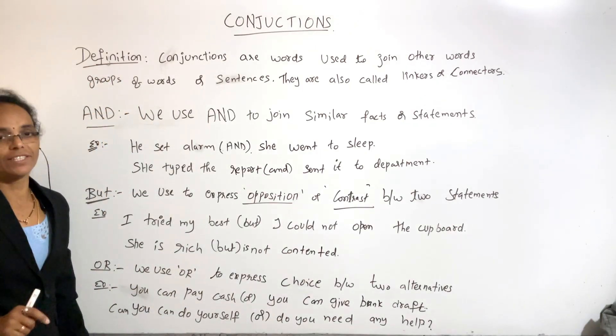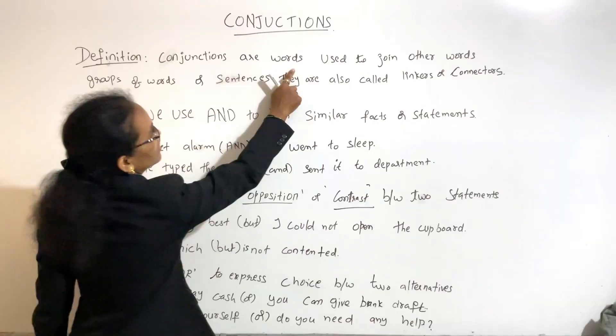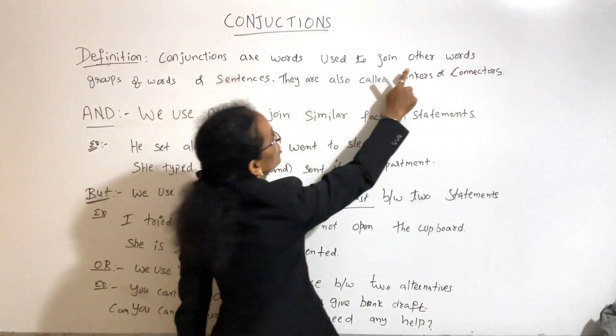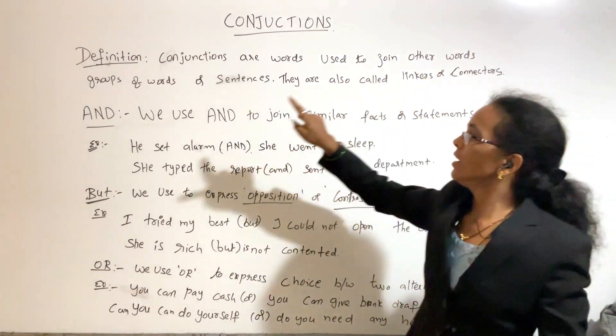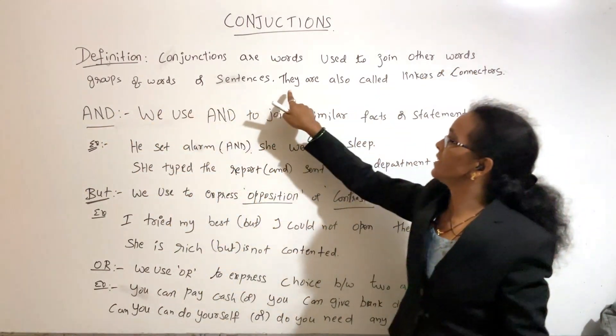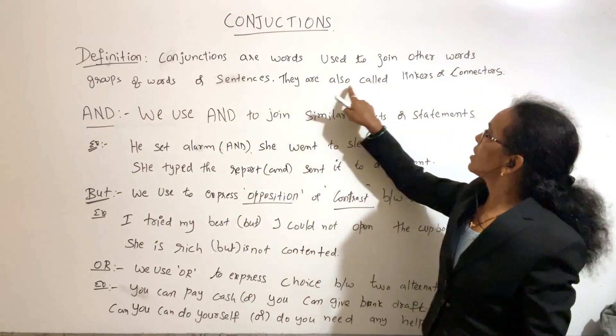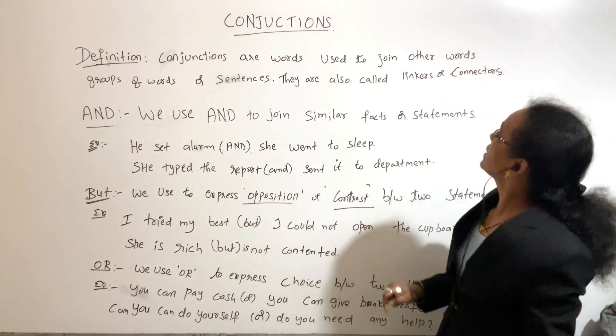Definition of conjunction: Conjunctions are words used to join other words, groups of words, or sentences. They are also called linkers or connectors.